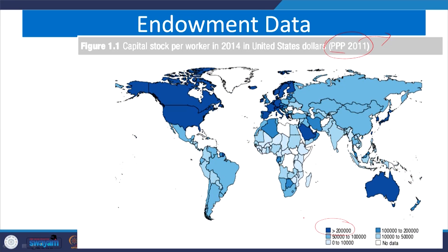The dark blue regions indicate greater than 200,000 US dollars of capital stock per worker, expressed in PPP terms so they are comparable across countries. The United States has huge capital stock; comparing it with India and China, these emerging countries have relatively lesser capital stock. Similarly, Australia and certain European countries also have higher capital stock compared to other countries, and accordingly we can project forms of export or import for respective resources.